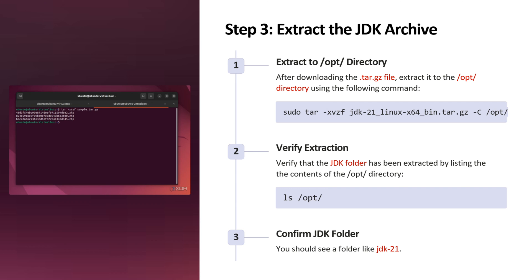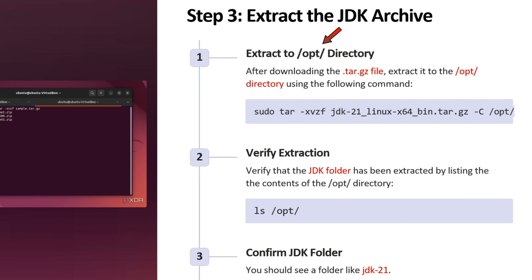Step 3 is to extract the JDK archive. We have to extract the archive file to the /opt directory using the tar command. Then we have to verify the extraction — for that, use the command ls /opt, and you will see a folder like JDK 21.